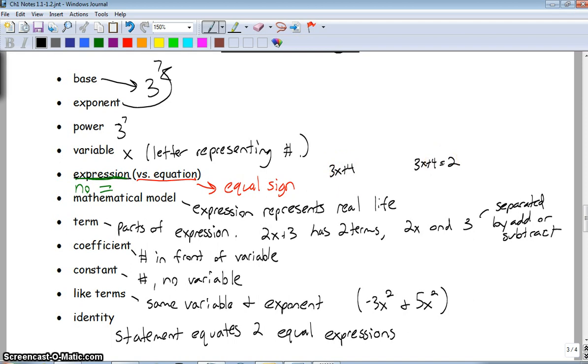A mathematical model is just an expression that represents a real-life situation. Term. This is important because some people get confused on this. Terms are just parts of expressions. So if I wrote 2x plus 3, which I have down there, it has two terms, the 2x and the 3. So you can always think about it as being separated by the addition or subtraction sign. 2 and x are one term because they're multiplied together.